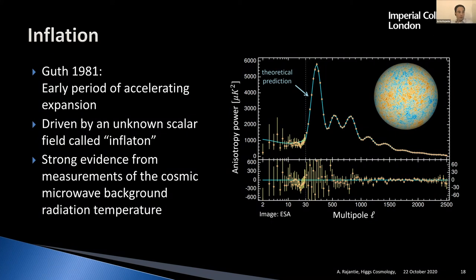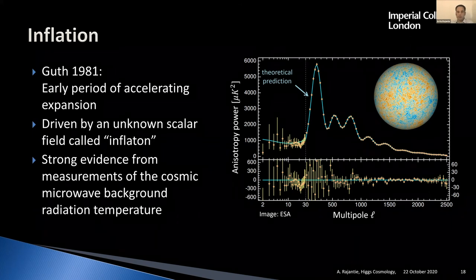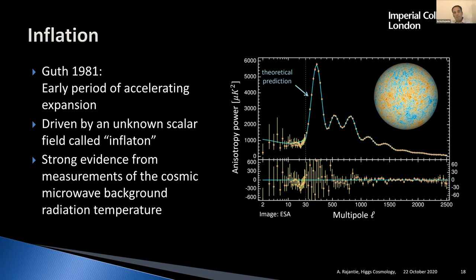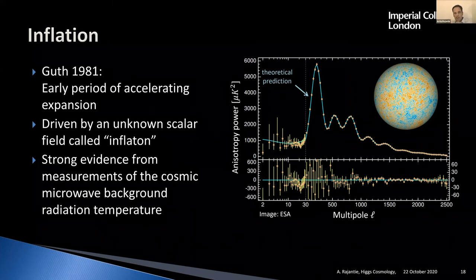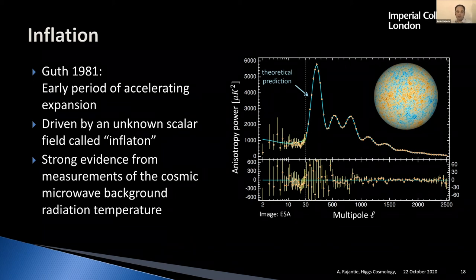Very soon after Guth had proposed inflation, it was realized that an accelerating period does a lot more than just make the universe large and flat. The quantum fluctuations of the inflaton field get amplified by this expansion, and they give rise to what we call curvature perturbations — ripples in the very early universe — which would later turn into all of the structure in the universe: galaxies, clusters of galaxies. All of that originates in the quantum fluctuations of the inflaton field.